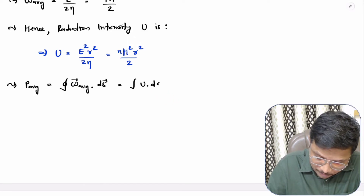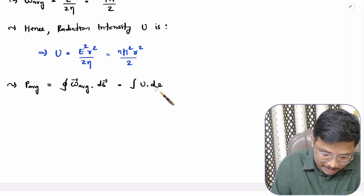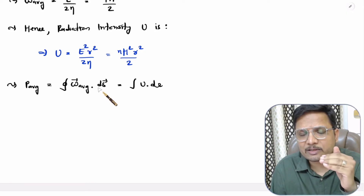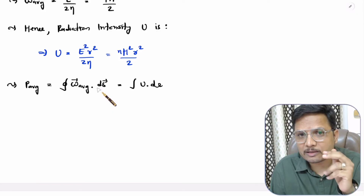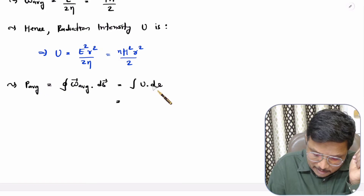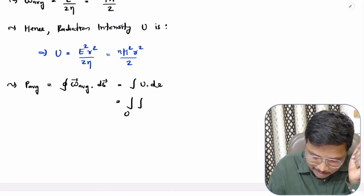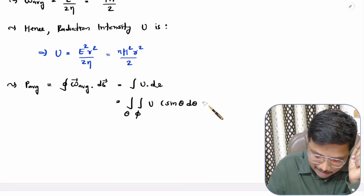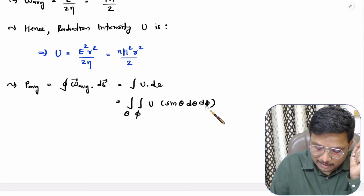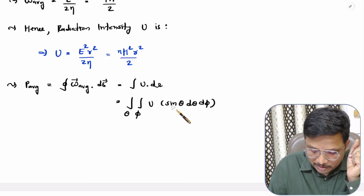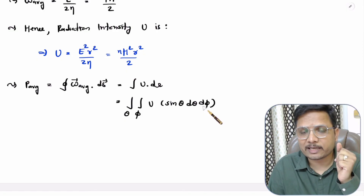We already know how to do surface integration based on Cartesian, cylindrical, and spherical coordinates. But for solid angle integration, the solid angle element is sinθ dθ dφ. So θ varies from one limit to another and φ varies from one limit to another. You integrate radiation intensity with respect to sinθ dθ dφ, and that gives you the average power.